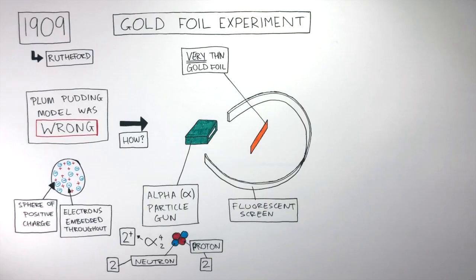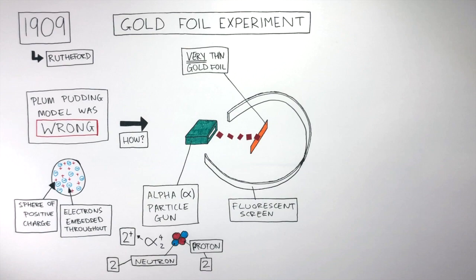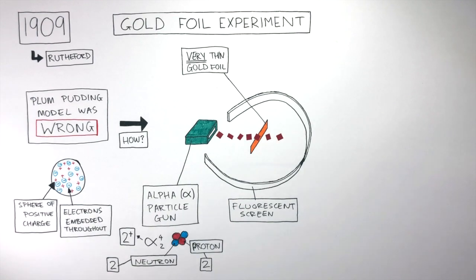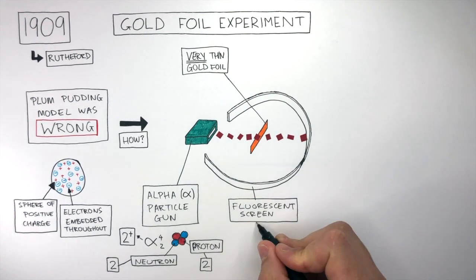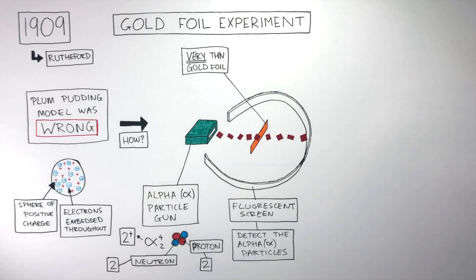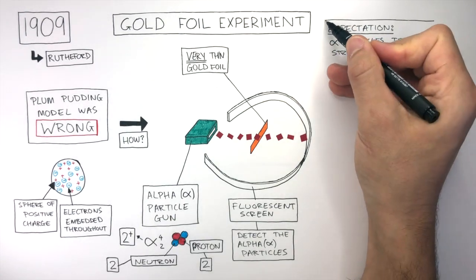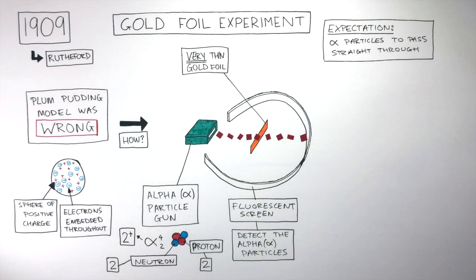In this gold foil experiment, Rutherford wanted to find out what would happen when an alpha particle gun fired positively charged alpha particles at the thin gold foil, and he wanted to see how these alpha particles interacted with the atoms in the thin gold foil. They expected the alpha particles to pass straight through and be detected by the fluorescent screen. Rutherford expected this because Dalton's Plum Pudding model said the atom was a sphere of positive charge, and he thought these dense, positively charged particles would pass straight through this cloud of positive charge.